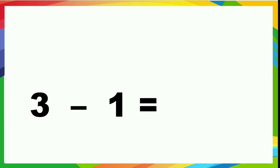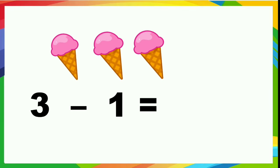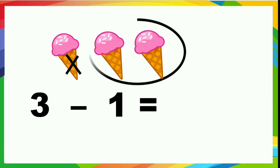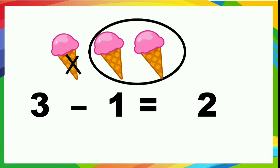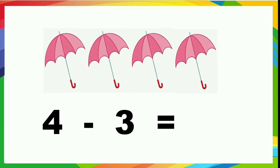3 minus 1. What are these? Ice creams. 3 ice creams are there. If you take away 1 ice cream, how many left? Count. 1, 2. 3 minus 1 is equal to 2. 2, okay.